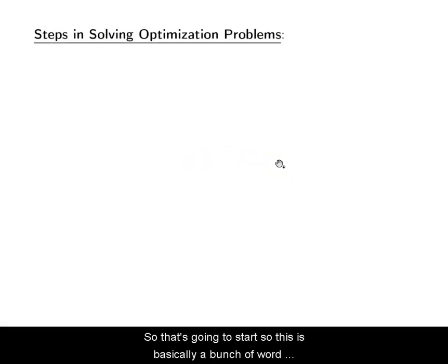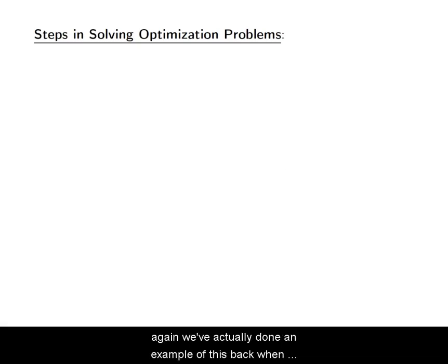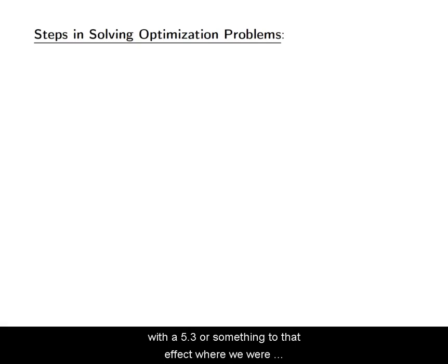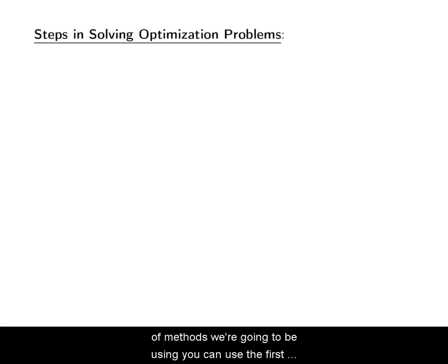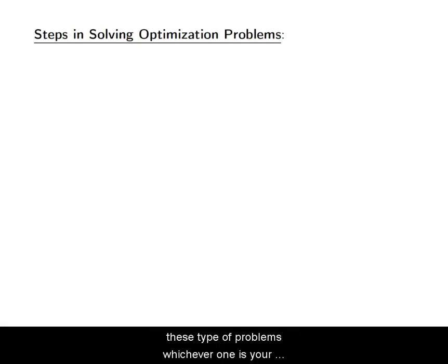This section is basically just a bunch of word problems — word problems that need calculus to be solved. We've actually done an example of this back when we were talking about economics in chapter 5.3 or something to that effect, where we were trying to optimize a profit function. It's the same kind of methods. You can use the first derivative test or the second derivative test for these types of problems, whichever is your preference.